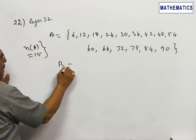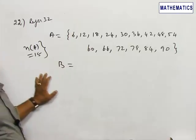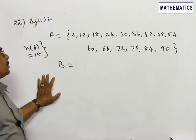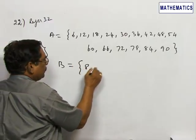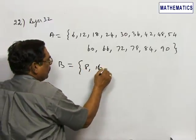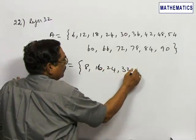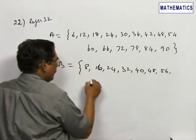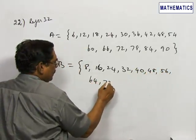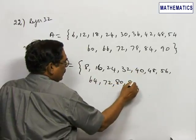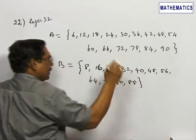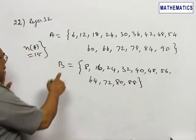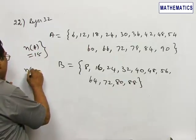The event of selecting numbers that are divisible by 8 from 1 to 90, I call that B. These are the numbers divisible by 8 from 1 to 90, and the total number here is equal to 11.